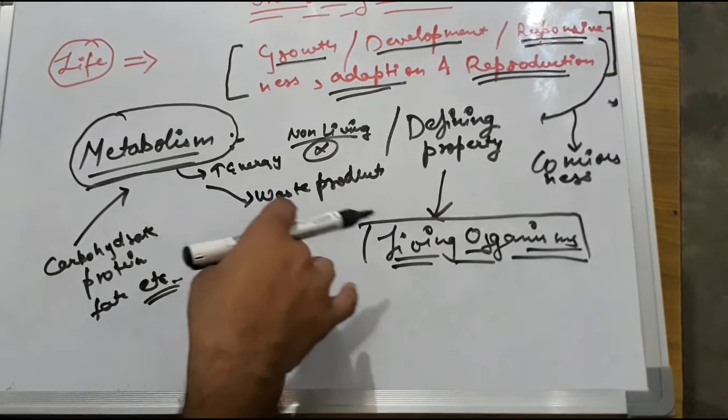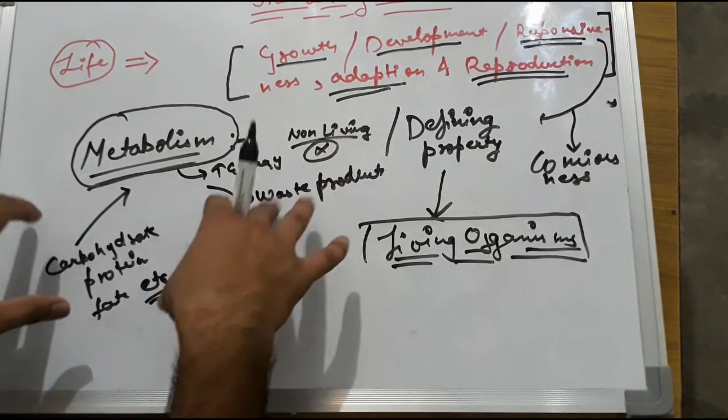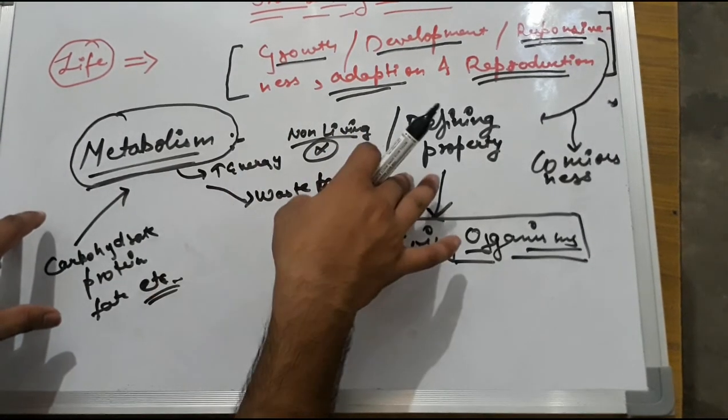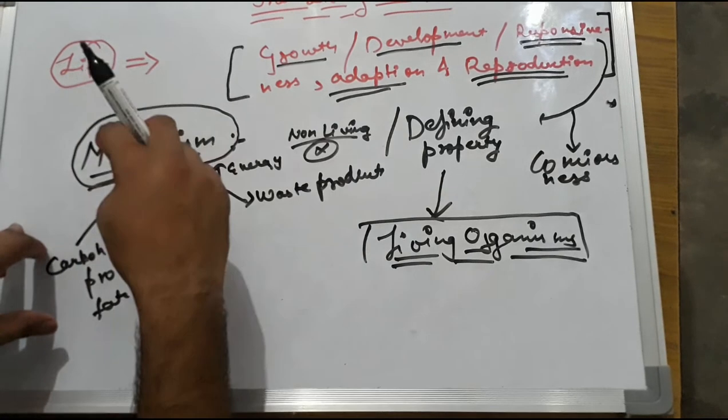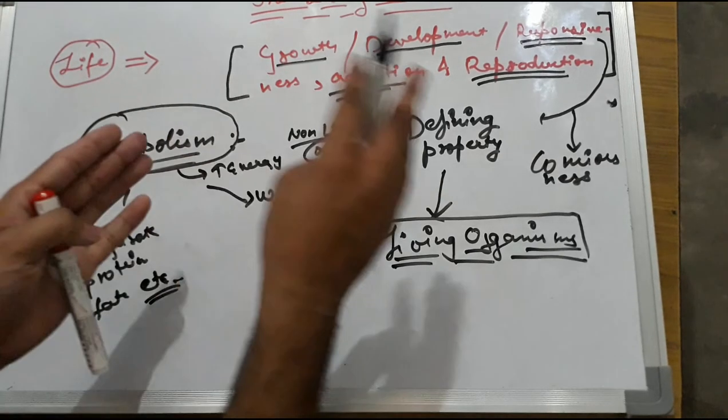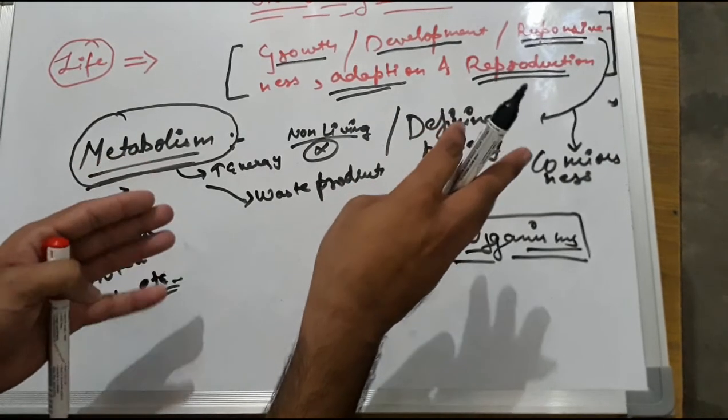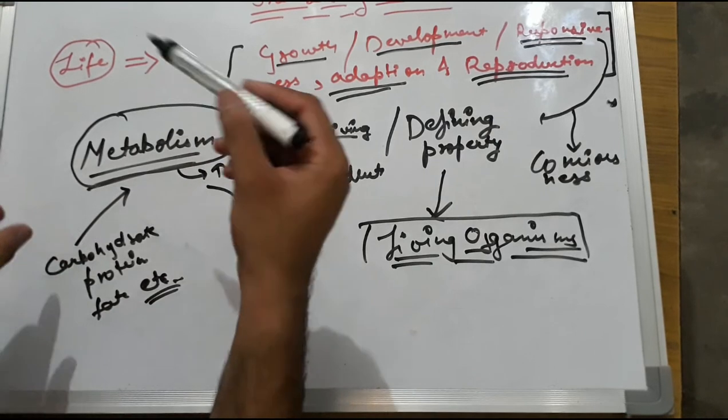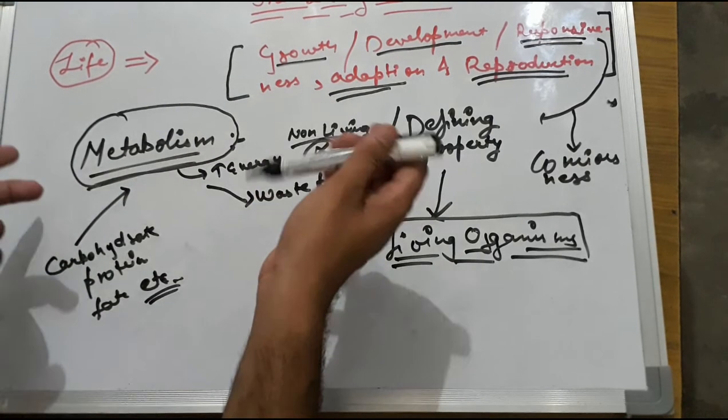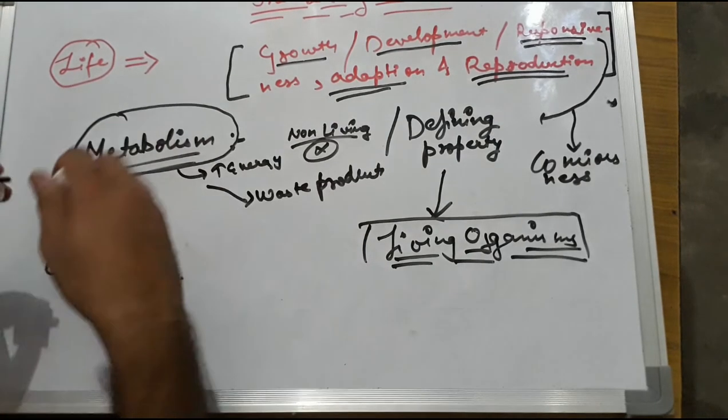In this video, we have seen such factors as defining properties of living organisms and life. There were some factors in which we can know what is life and what are the unique features of life.